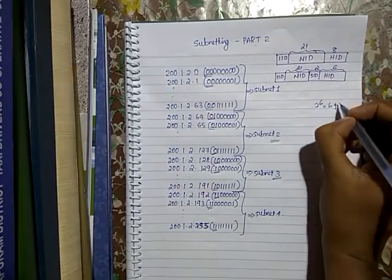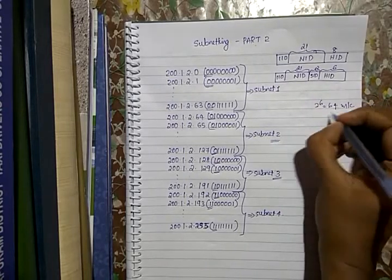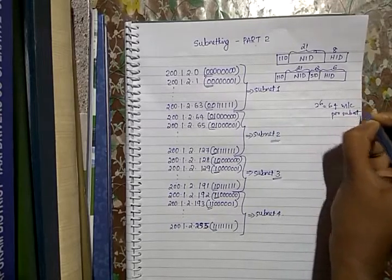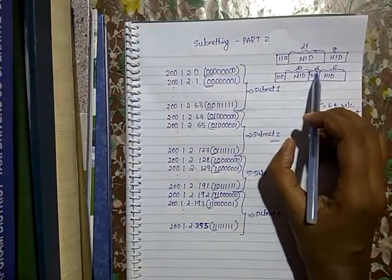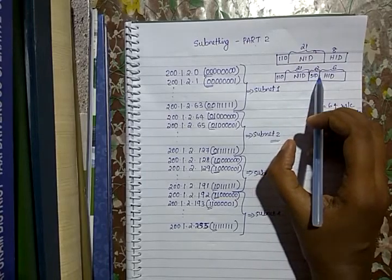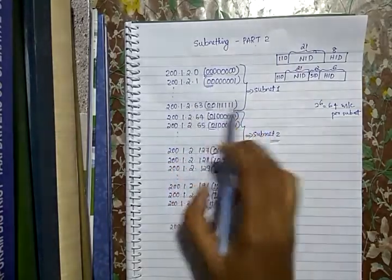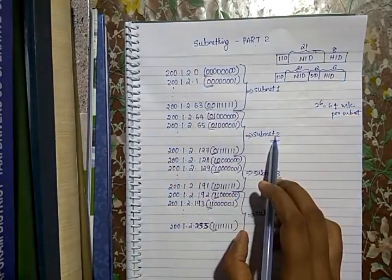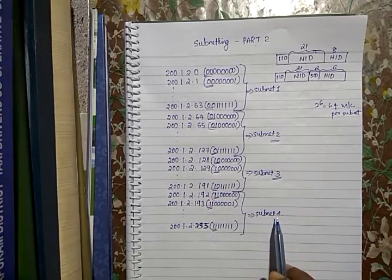Within a subnet we need only 6 bits as the host ID — using 6 bits you can have 2 raised to 6, which is 64 combinations. The remaining two bits identify a particular subnet. If those two bits are '00' it represents subnet 1, '01' represents subnet 2, '10' is subnet 3, and '11' is subnet 4.